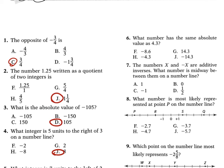For 6, it asks which number has the same absolute value as 4.3 — that's negative 4.3. For 7, it says x and negative x are additive inverses; what number is midway between them on a number line? The number directly between them, in the middle, would be 0. Problem 8 asks what number is most likely represented at point P on the number line. This is 0, negative 1, R would be negative 2, negative 3, negative 4, negative 5. So this is going to be negative 4-point-something — negative 4.7.